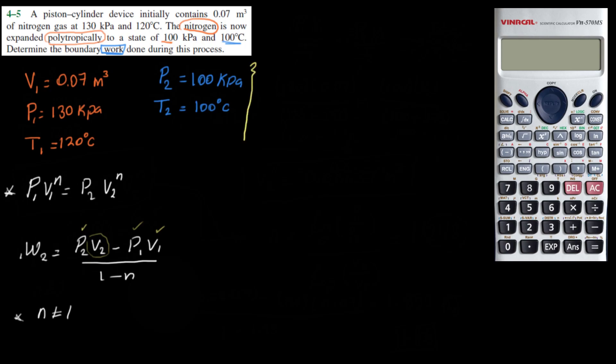And we can find V2 using the ideal gas law, because remember, nitrogen can be treated as an ideal gas, and we have this relationship for the ideal gas law. P1V1 over T1 is going to be equal to P2V2 over T2. This is the relationship derived from the ideal gas law, and only valid for ideal gases. Nitrogen is an ideal gas in this case.